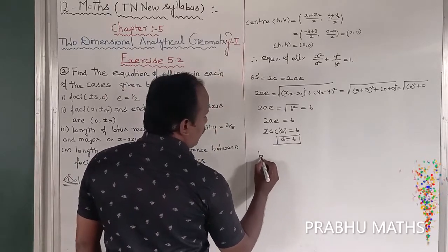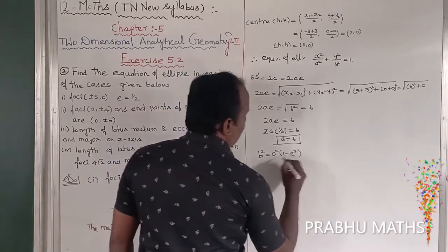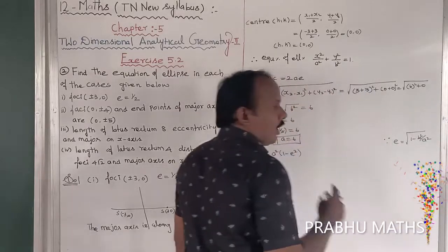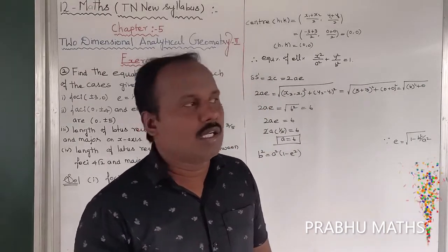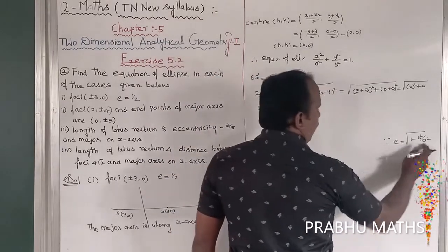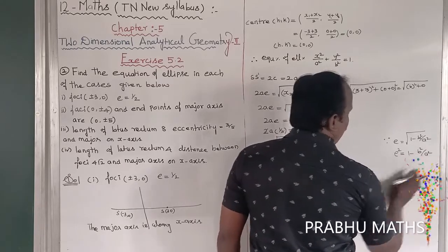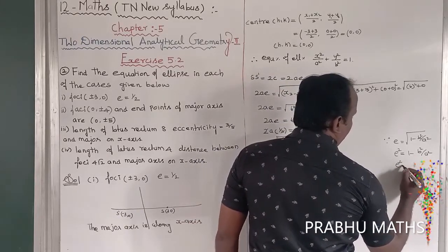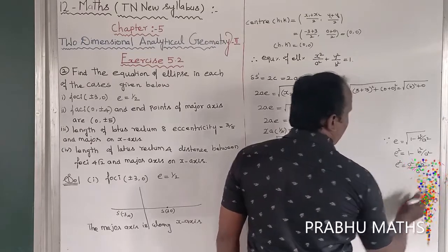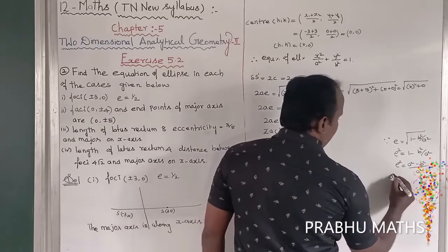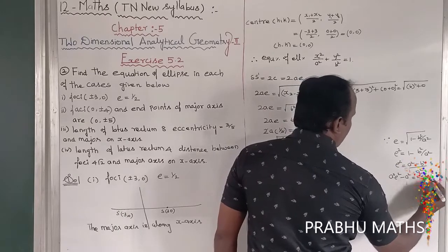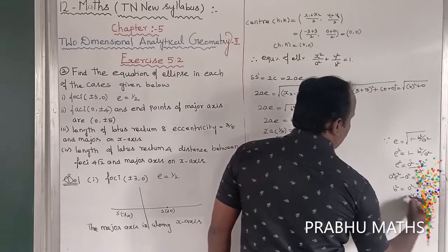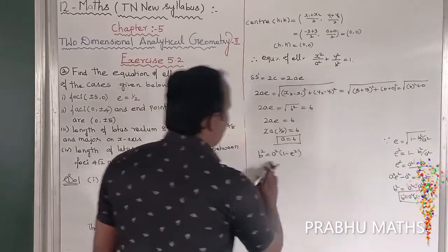Next formula: B squared is equal to A squared into 1 minus E squared. The eccentricity formula is E equals root of 1 minus B squared by A squared. Squaring on both sides: E squared equals 1 minus B squared by A squared. To find the value of B squared: E squared equals A squared minus B squared divided by A squared. By cross multiplication: A squared E squared minus A squared equals minus B squared, so B squared equals A squared minus A squared E squared, equal to A squared into 1 minus E squared. That is B squared.